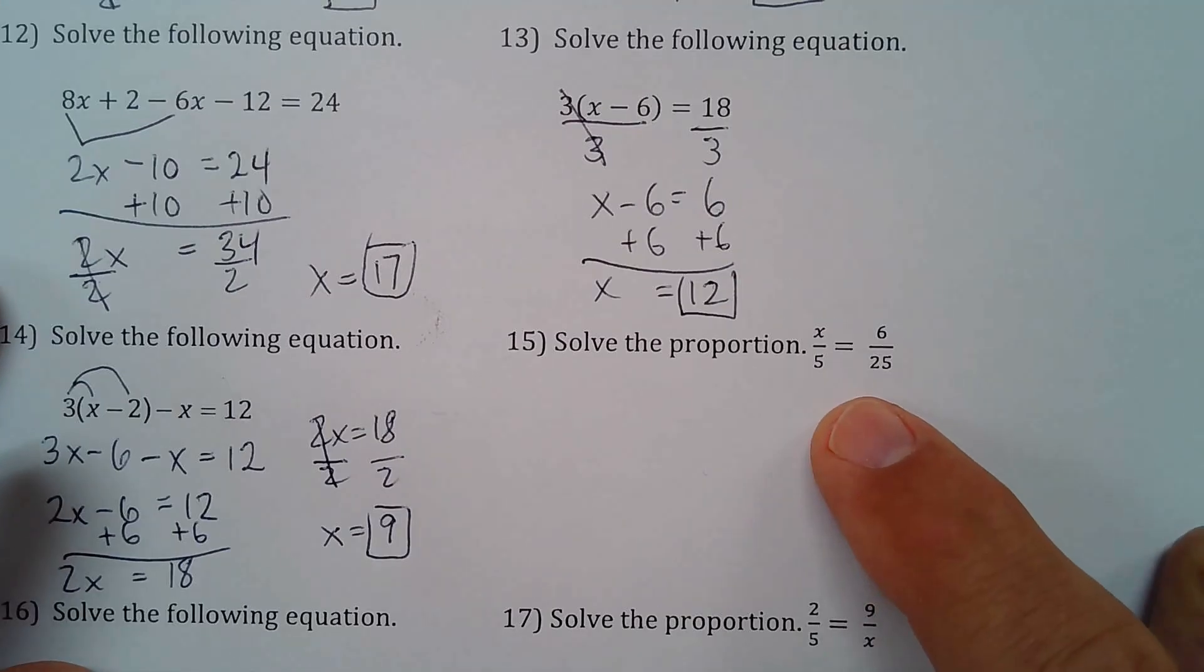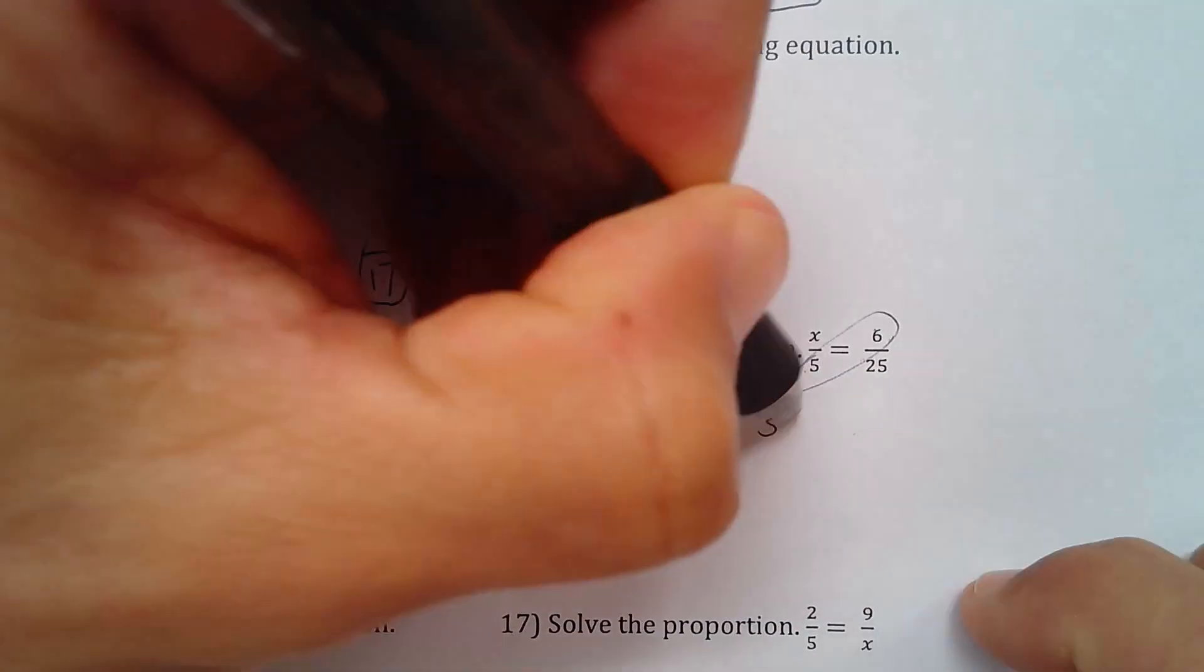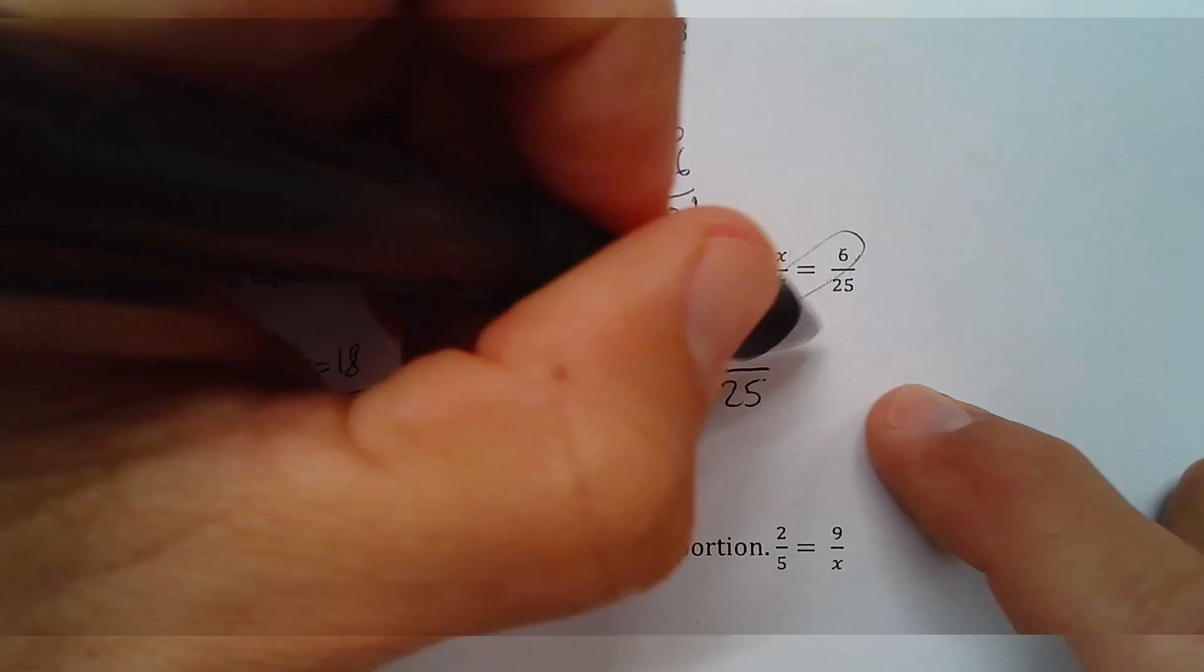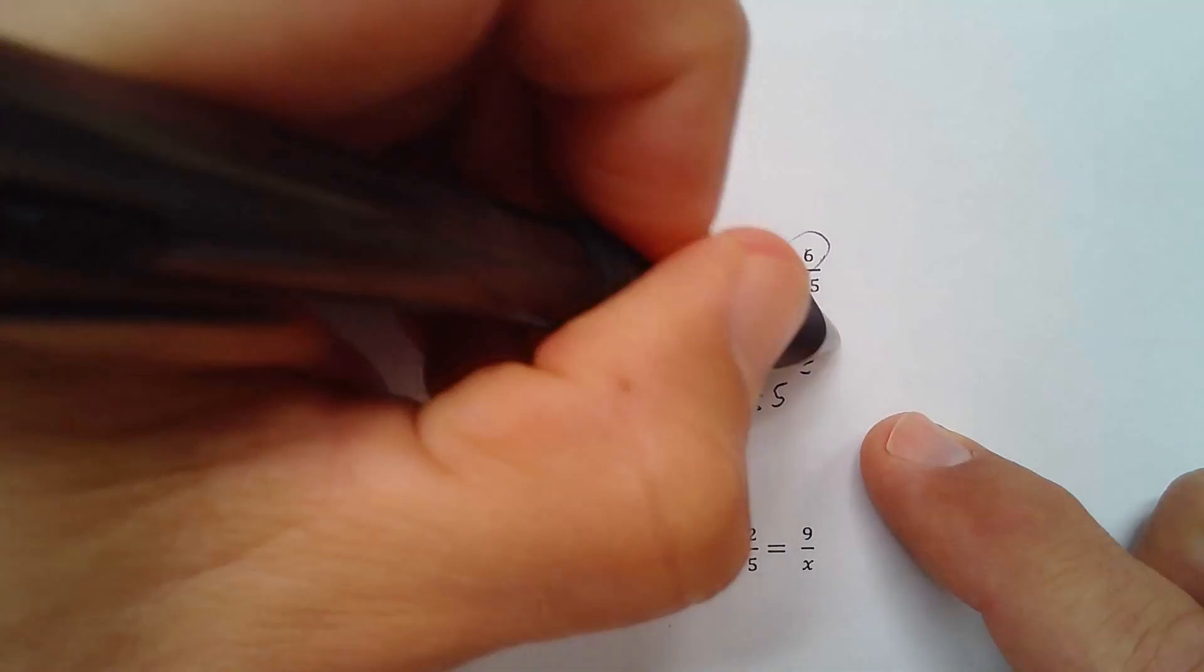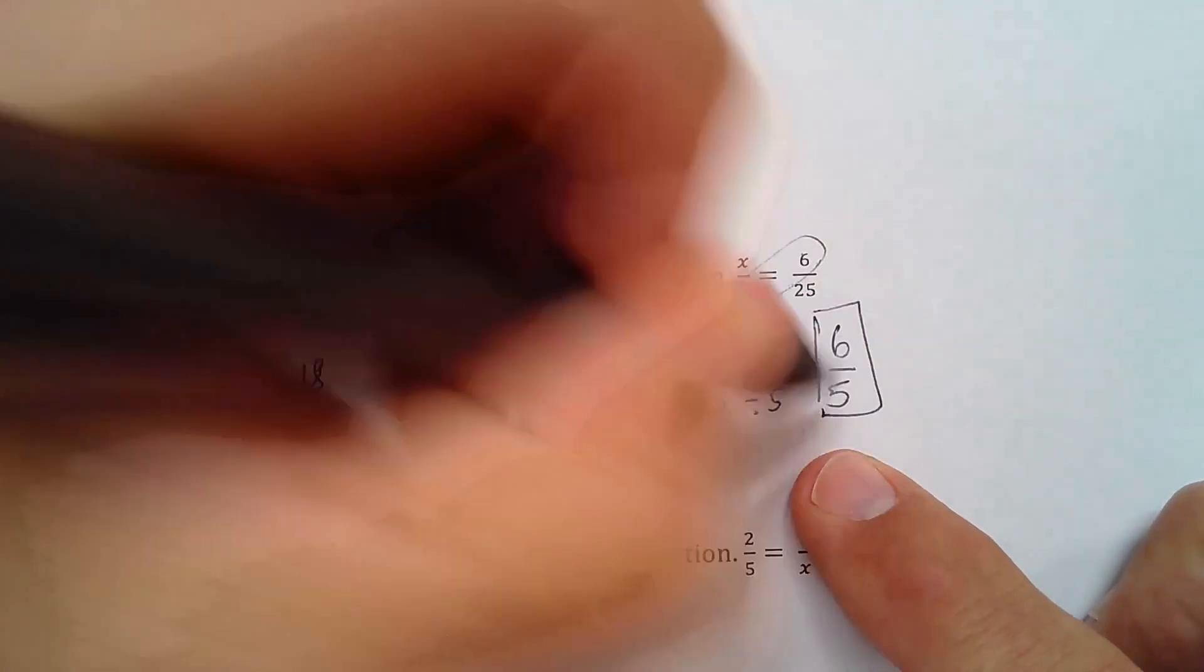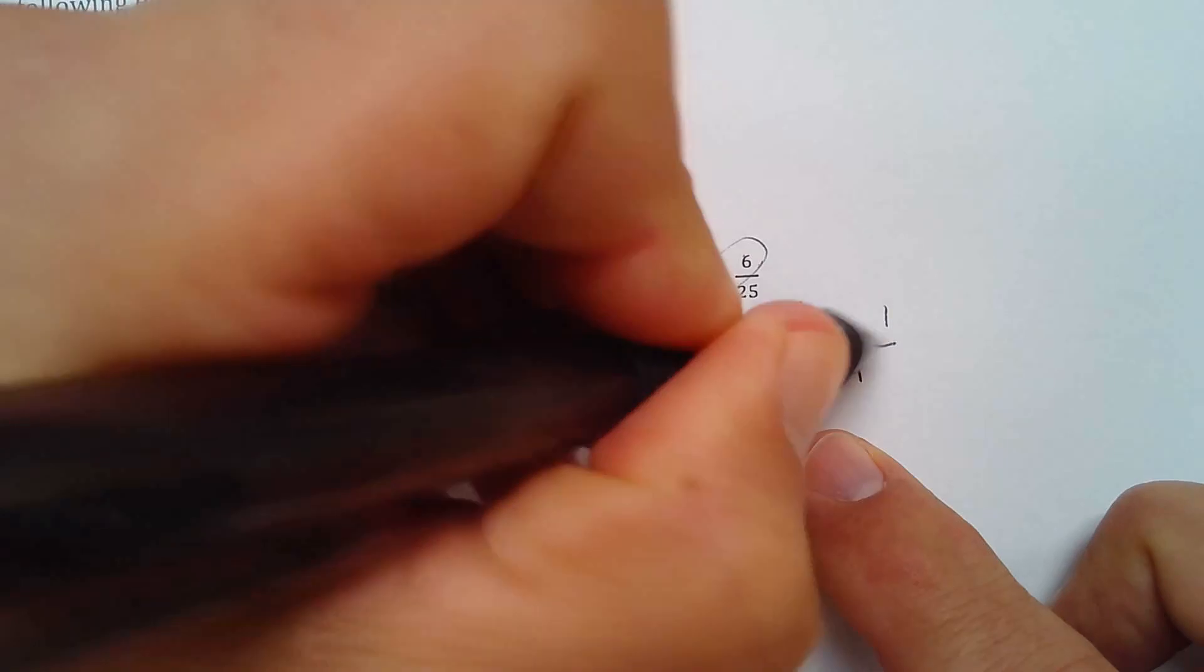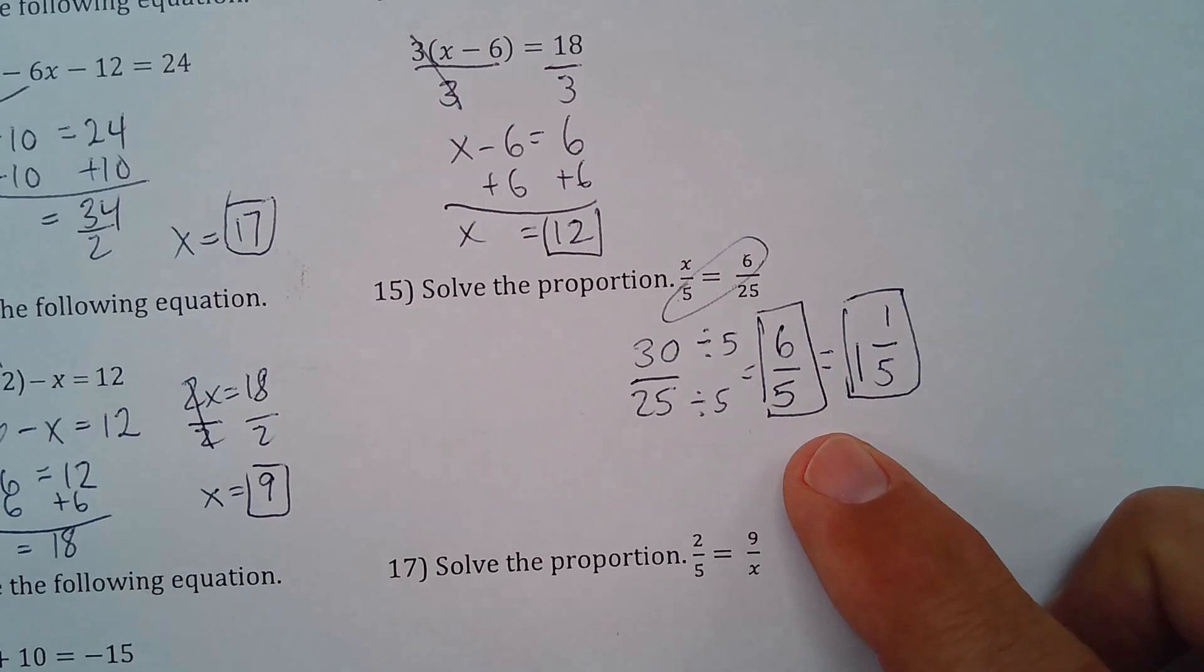Okay. This one. I probably, what I would do is, to solve this, I would cross multiply. 6 times 5 is 30. And then you divide by 25. I can simplify this. I can divide them both by 5. 30 divided by 5 is 6. And 25 divided by 5 is 5. Boom. I call it 6 fifths. Or, I guess, if you want to, 5 goes into 6 one time with one left over. 1 and 1 fifth.